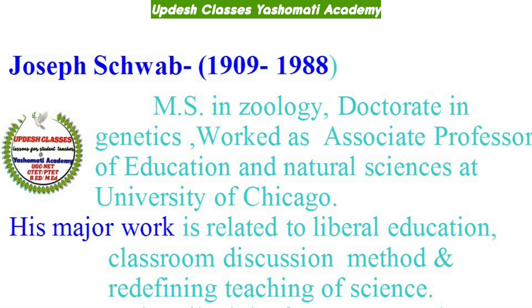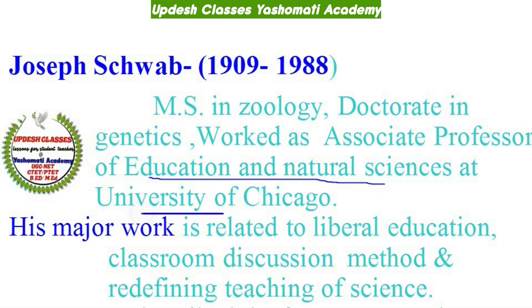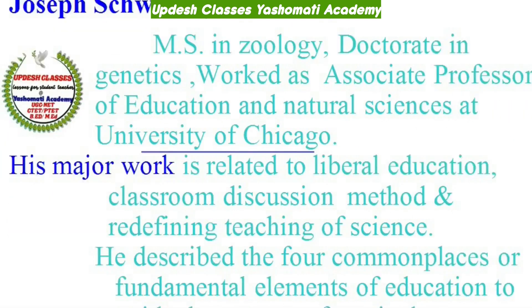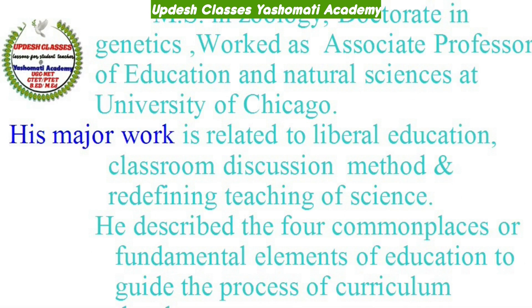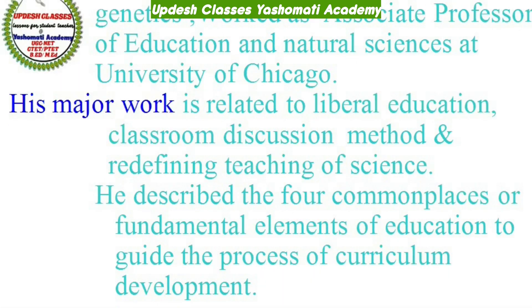सबसे पहले जानकारी लेते हैं Joseph Schwab के बारे में, जिनका time period 1909 से 1988 है। ये MS in geology थे, इन्होंने doctorate in genetics किया था, और ये University of Chicago में associate professor of education and natural sciences की post पर work करते थे। इनका ज़्यादातर काम liberal education से related था और इन्होंने classroom discussion method पर बहुत काम किया, जिससे science teaching को redefine किया जाने लगा।